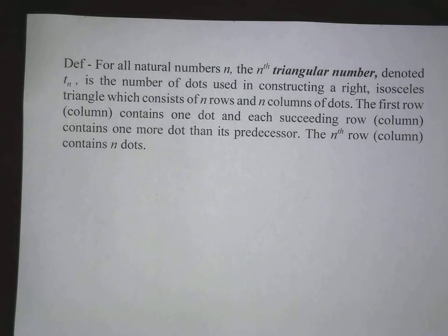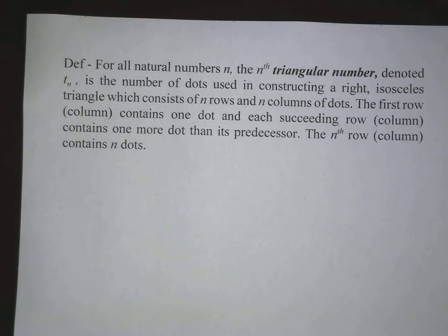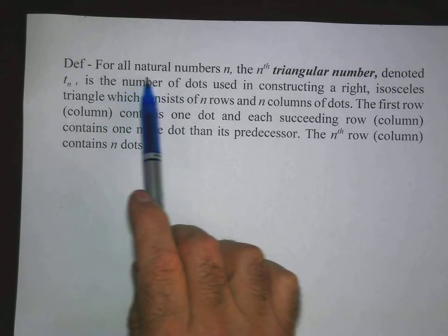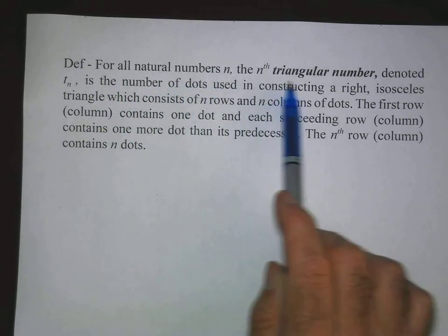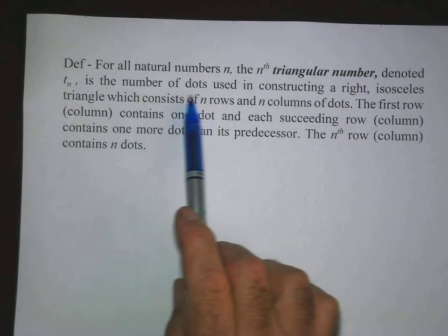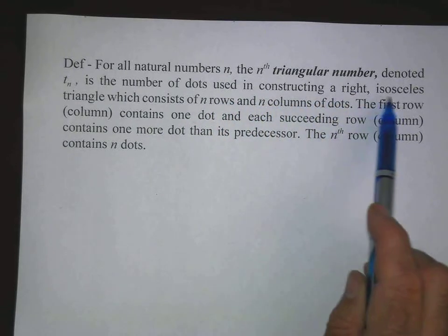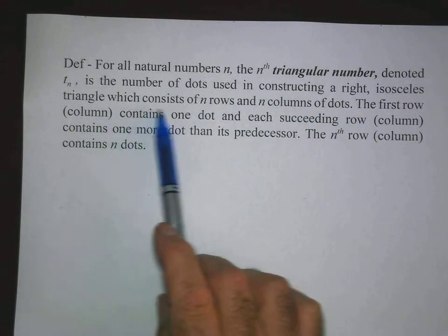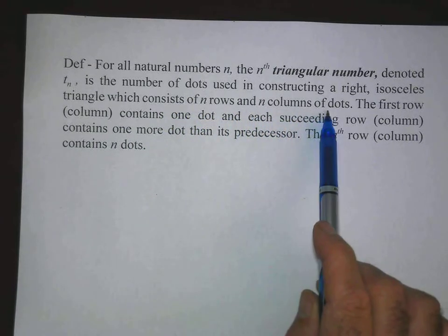We're going to look at triangular numbers and square numbers, and we're going to do some work with dot diagrams to prove some fundamental facts about triangular numbers and square numbers. First of all, let's define what a triangular number is. For all natural numbers n, the nth triangular number, denoted T sub n, is the number of dots used in constructing a right isosceles triangle, which consists of n rows and n columns of dots.